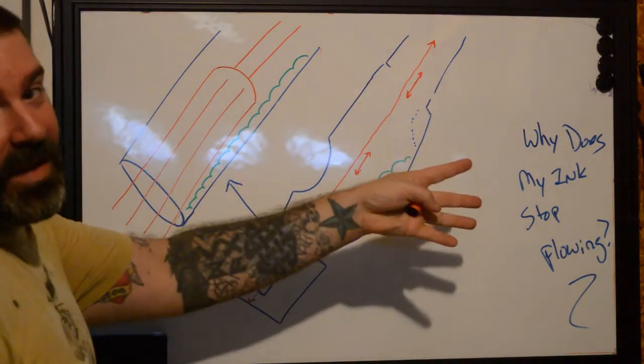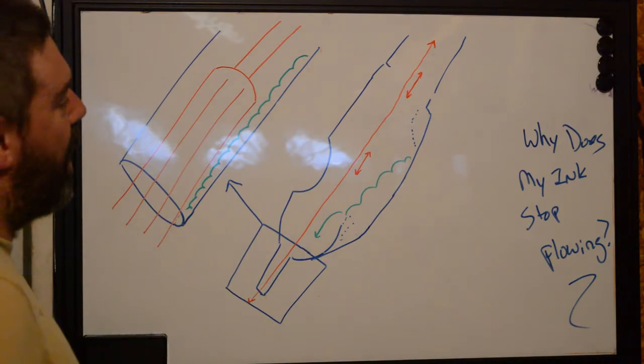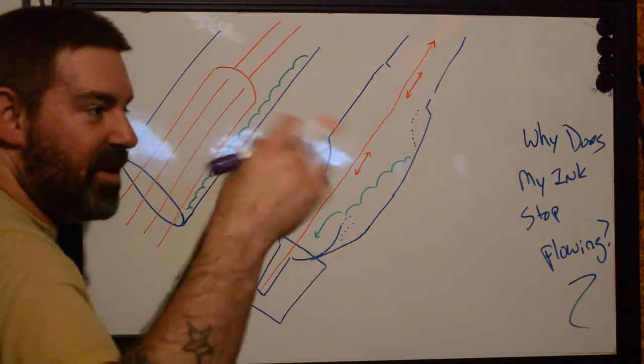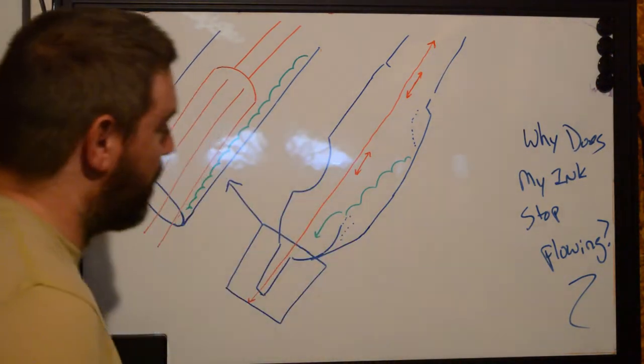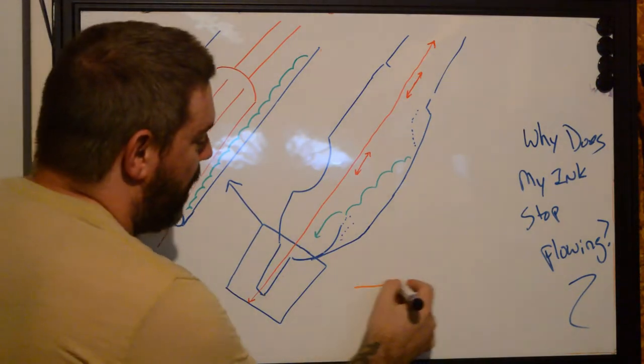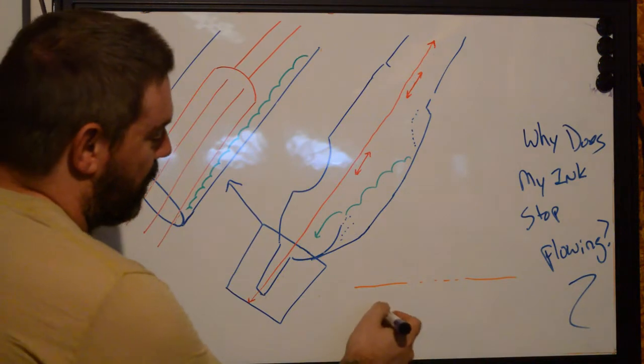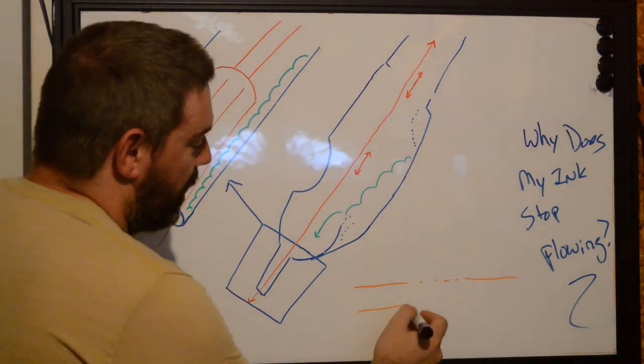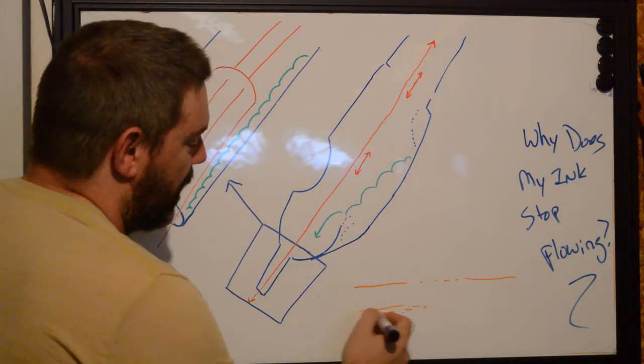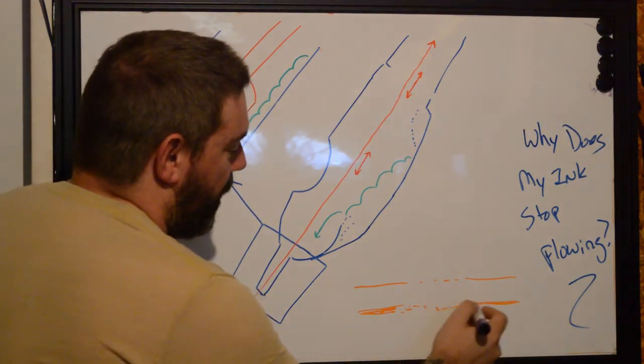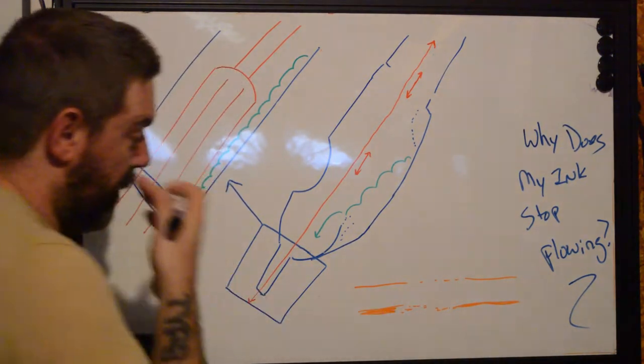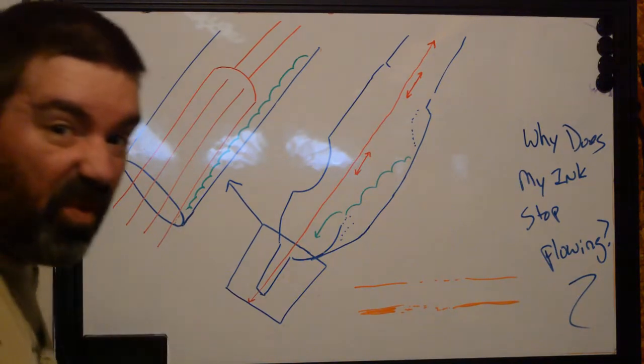So let's say you're doing a tattoo. You're an hour, hour and a half in, and you're just getting this inconsistent spattering of pigment coming out. You're getting lines with massive holidays, right? When they're just picking up and dropping like this, or maybe you're seeing a line that looks all sketchy instead of being solid. There's a few reasons why this happens.